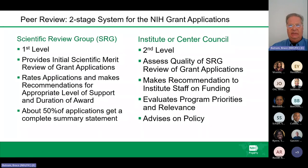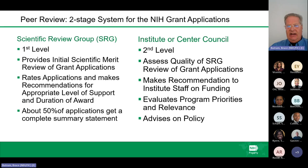NIH uses a two-stage peer review system. The first level is the initial scientific merit review: the study section rates the application, makes recommendations on the appropriate level, support, and duration of the award—about 50% of applications receive a complete summary statement. The second level review is conducted by the institute or center council or board, which assesses the quality of the first review, makes funding recommendations to institute staff, evaluates program priorities, and advises on policy.